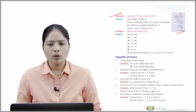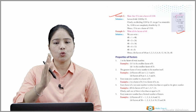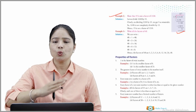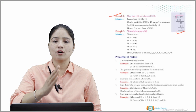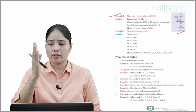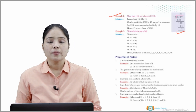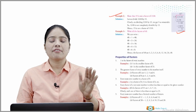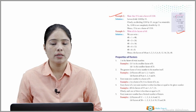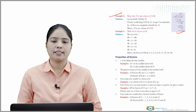Example 3: Write all the factors of 48. We can write 48 = 1×48, 48 = 2×24, 48 = 3×16, 48 = 4×12, and 48 = 6×8. Hence the factors of 48 are 1, 2, 3, 4, 6, 8, 12, 16, 24, and 48.